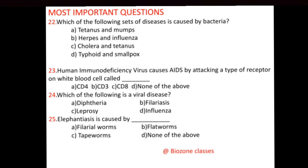Question number 23: Human immunodeficiency virus causes AIDS by attacking a type of receptor on white blood cells. The question asks for the receptor on WBCs that HIV attacks. Options: A. CD4, B. CD3, C. CD8, D. None of the above. CD4 is the correct answer. CD4 receptors are present on white blood cells, and HIV attaches to these receptors. This is one of the most important questions for your NEET exam.